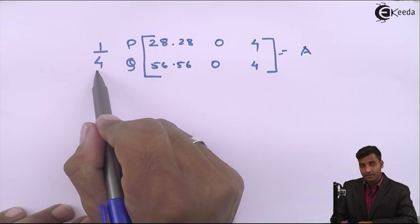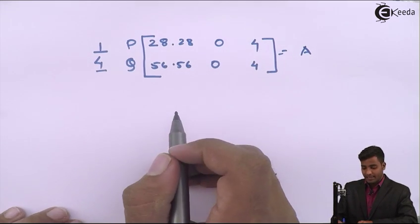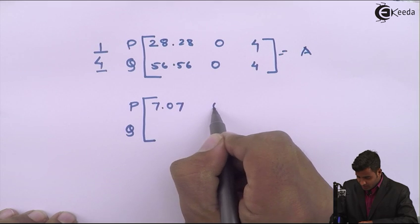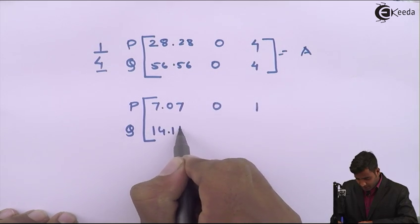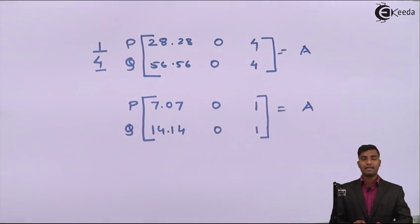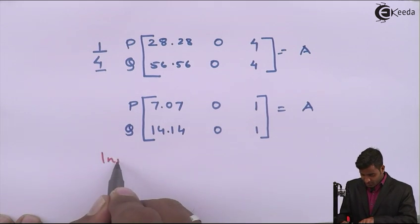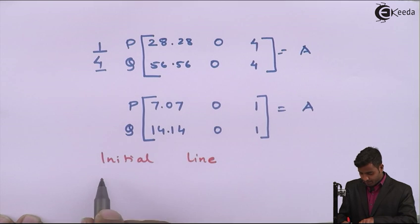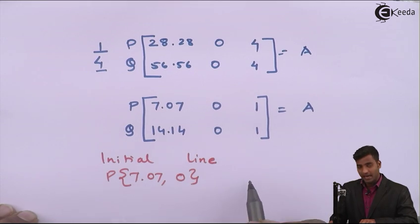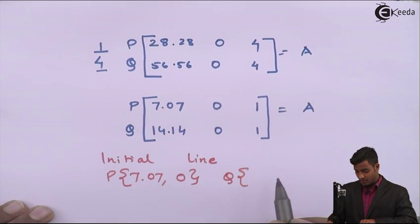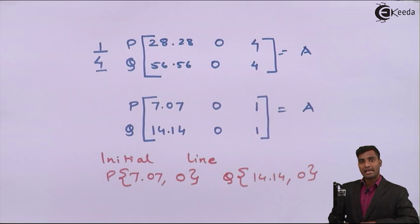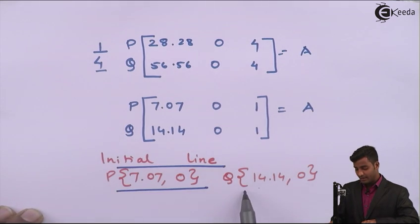Dividing each term by 4, we get A = [7.07, 0, 1; 14.14, 0, 1]. So the initial line has P at coordinate (7.07, 0) and Q at coordinate (14.14, 0). We have successfully calculated the initial line PQ.